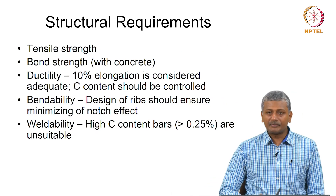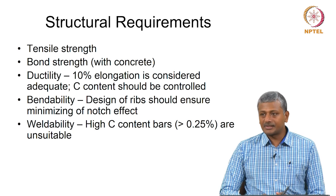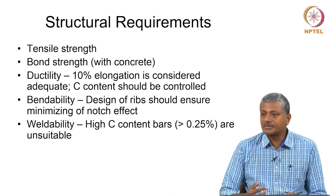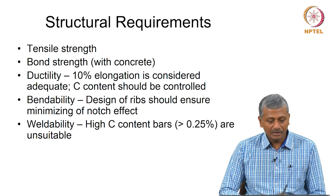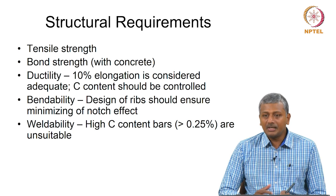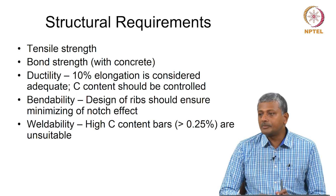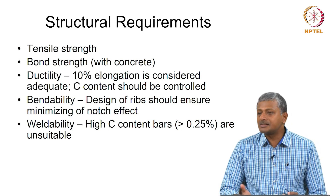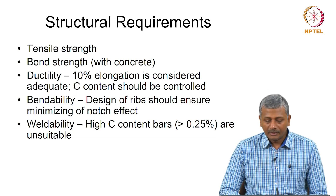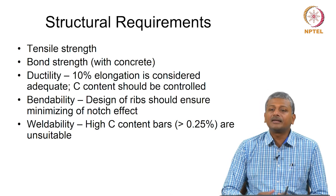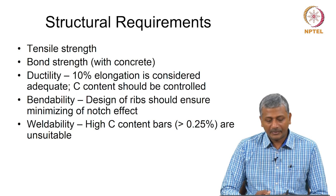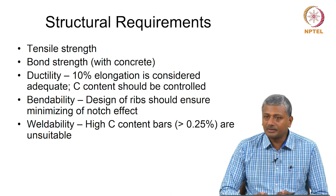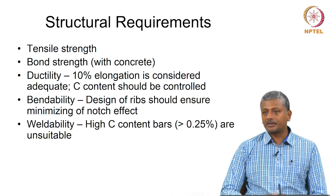The strength and ductility are imparted by the inner ductile core and the hard strong outer layer, and good corrosion resistance comes from the outer martensitic layer being less prone to corrosion than the inner pearlite phase. Structural requirements for steel include obviously tensile strength as the primary characteristic as a reinforcing material, good bond with concrete — which is why ribs are introduced. Ductility is important; 10% elongation is usually considered adequate but typical steels give close to 20%. Carbon content must be controlled because higher carbon content means lesser elongation.